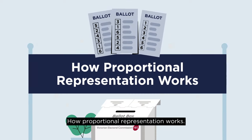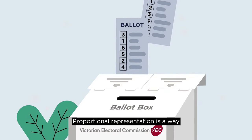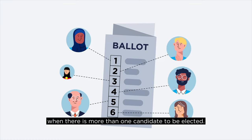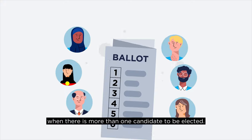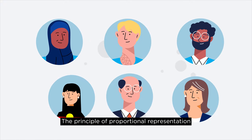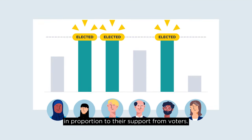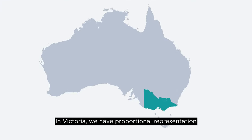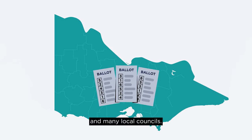How proportional representation works. Proportional representation is a way of counting votes in an election when there is more than one candidate to be elected. The principle of proportional representation is that candidates are elected in proportion to their support from voters. In Victoria, we have proportional representation to elect members of the state's upper house and many local councils.